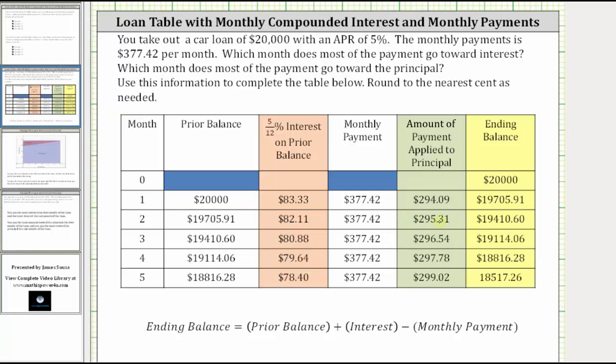Therefore, after the second month, the loan amount is now $19,410.60. Looking at the loan table, notice how as the months go by, you are paying less and less in interest, which means you pay the most interest toward the beginning of the loan and the least interest toward the end of the loan.